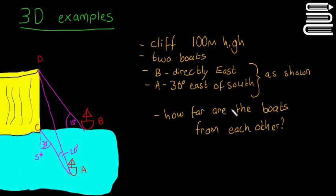How far are the boats from each other is the question. So that's the only information we're given, and we have to work out how far the boats are from each other. So, how do we start it?